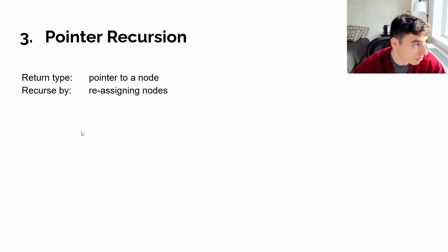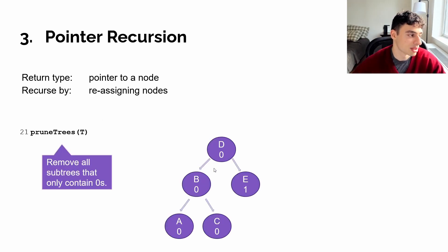So with pointer recursion, we essentially are going to recurse by reassigning, or with these examples, reassigning the nodes or the pointers of various nodes in our traversal. I think a good example of this is the prune trees problem. Now the prune trees problem, it's a simple binary tree question.